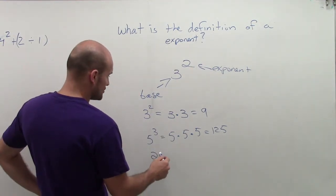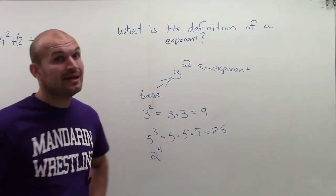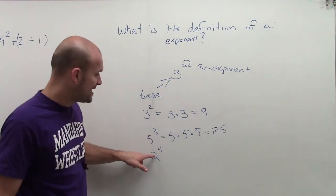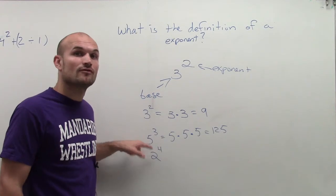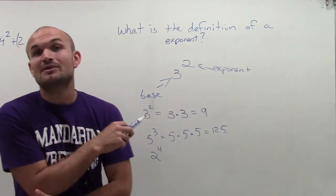If you say two to the fourth, that means you're going to have to multiply your base by itself four times. That's what the exponent does.